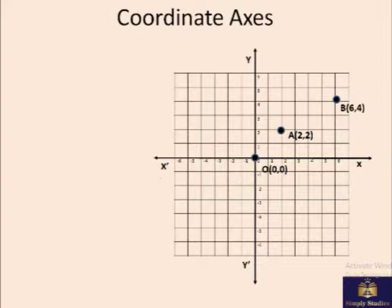Now in coordinate axis, here is one point A at 2, 2. Another point is, as you can see here, 6, 4, because the X axis is 6 and the Y axis is 4. And now at the center, this is known as origin. Origin is always at 0, 0.